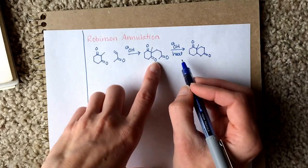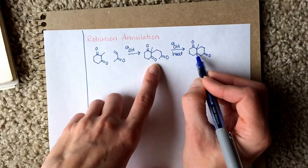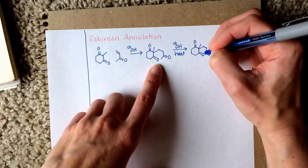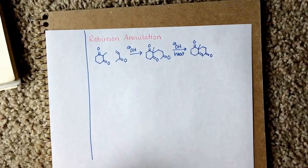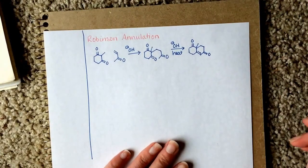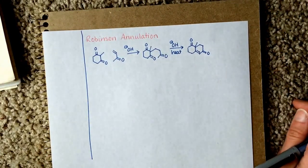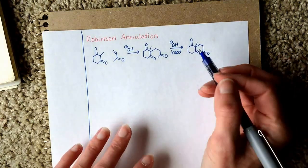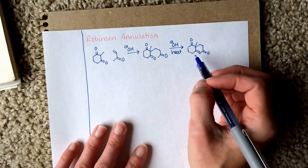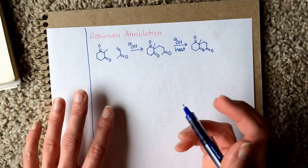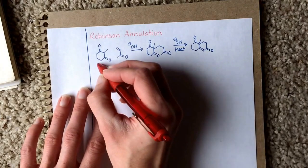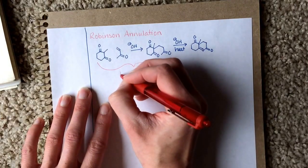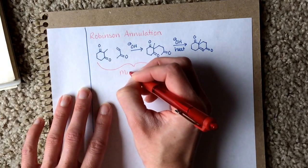At first we'll have an OH group out here, but we're going to do the condensation and dehydrate — pop the OH group off and add a double bond. So we've made a fused ring. This much of it is a Michael addition reaction.